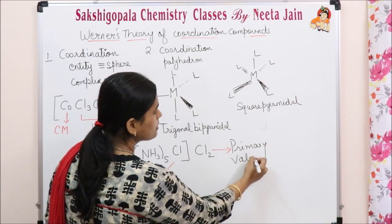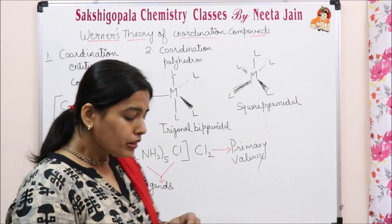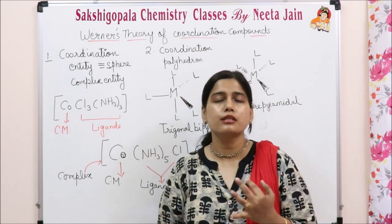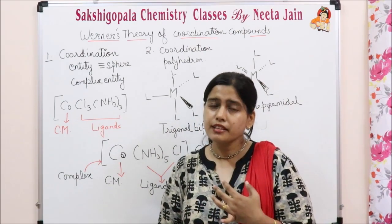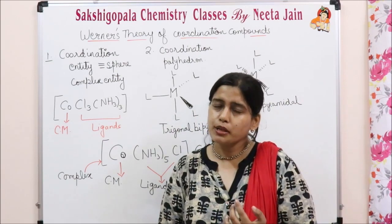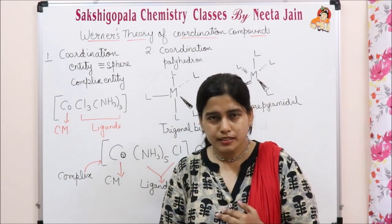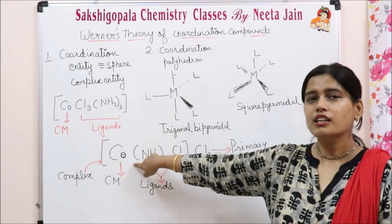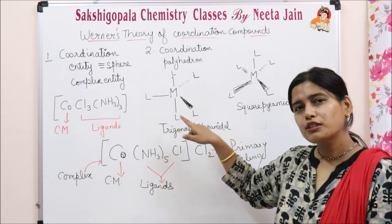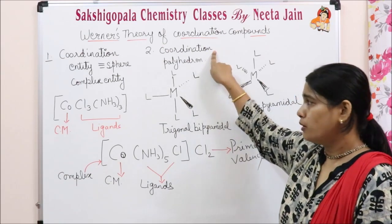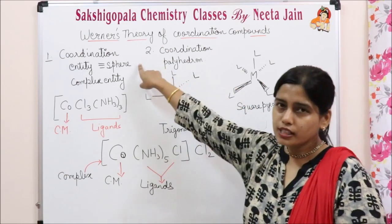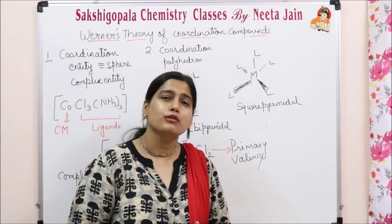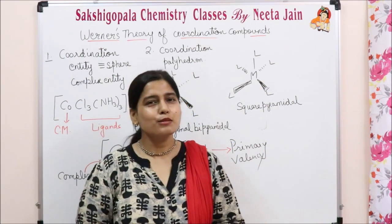In summary, Werner's theory of coordination compounds covers: primary valency (ionizable, counter ion, satisfied by negative ions), secondary valency equal to the coordination number, and the coordination number being specific for any metal — equal to the number of atoms or groups attached to the central metal atom. These ligands form a specific geometry called the coordination polyhedron, and what is inside the square bracket is called the complex. I hope you enjoyed the lecture. Please do like and subscribe to the channel. Thank you everybody.